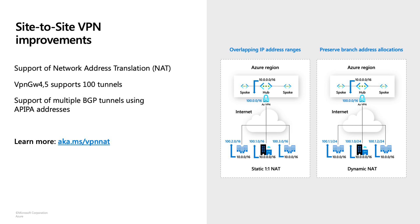Which type to use depends on your application's communication pattern. If your application has a server-to-server communication pattern — meaning VMs in your on-premises and VMs in Azure both initiate connections to the other side — then you need static NAT. However, if your applications follow a client-server communication pattern, you only need dynamic NAT. For more details, you can look at the document at aka.ms/VPN-NAT.